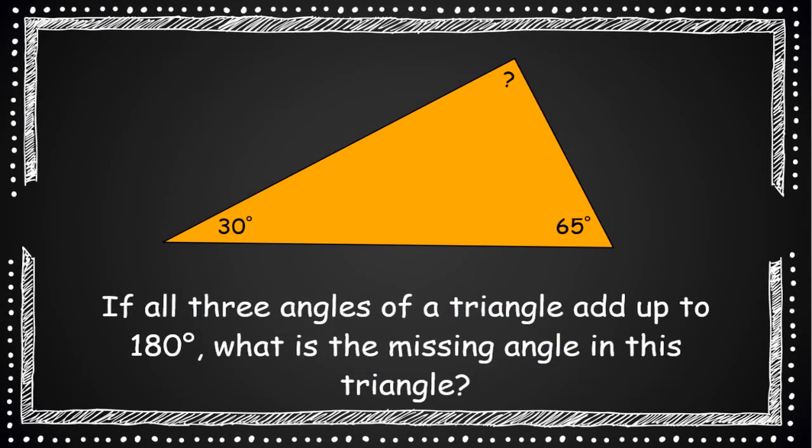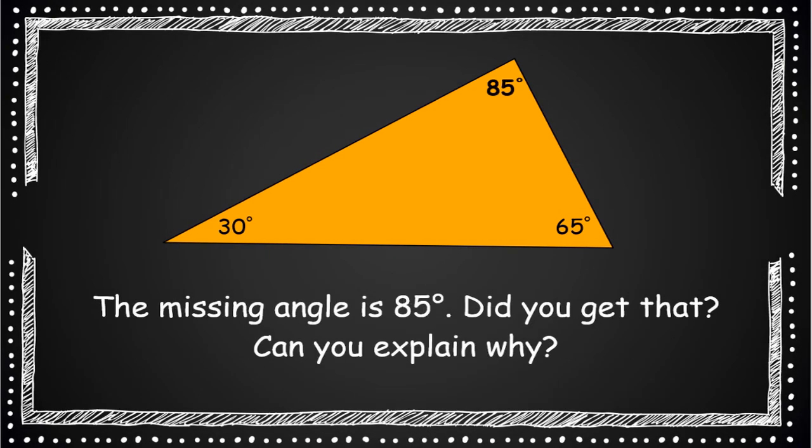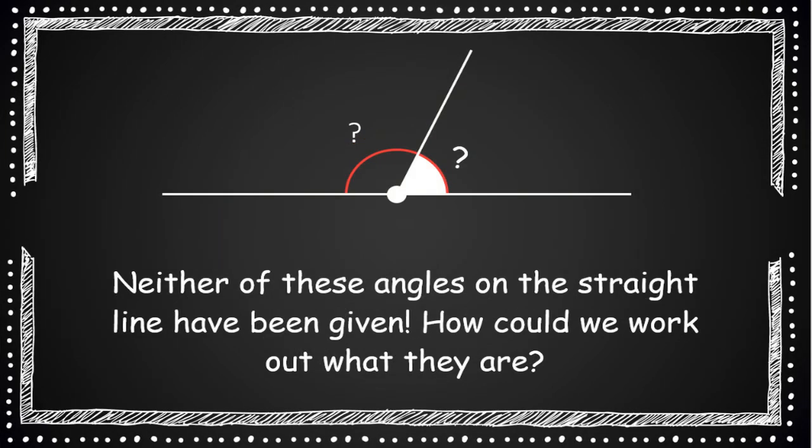If all of the angles of a triangle add up to 180, what's the missing angle in this triangle? Pause the video and write down an answer. So the missing angle was 85 degrees. Hopefully you got that and you understand why.